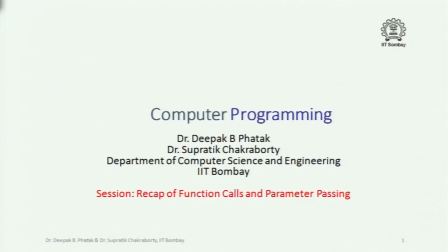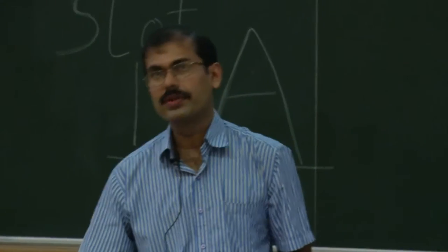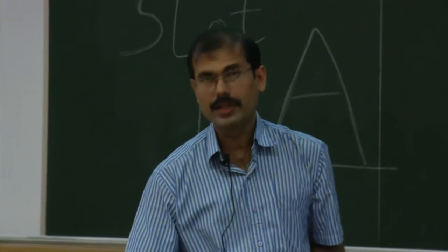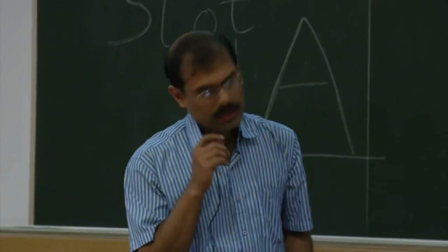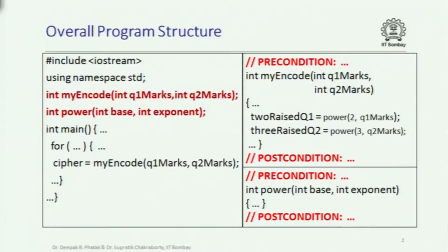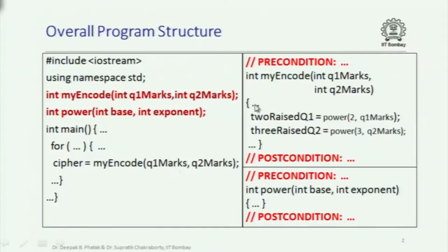Let's quickly go through a recap of the first three lectures on functions. In this class, we will cover functions and parameter passing and flow of control. A program with functions in general looks like this: you have declarations for the functions, and then you have the main function from within which you can call some other function. We were trying to encode two quiz marks as one integer, and this function myencode has its own pre-condition and post-condition, and it in turn calls another function called power, which has its own pre-condition and post-condition.